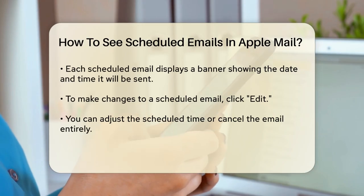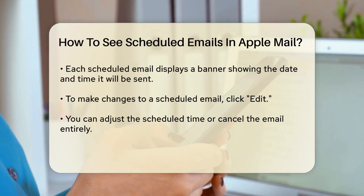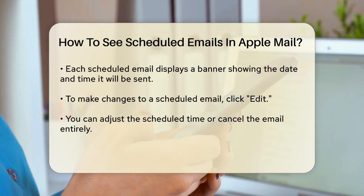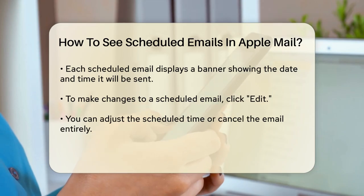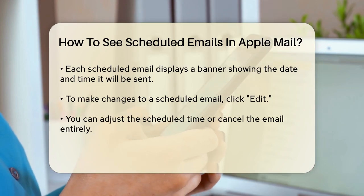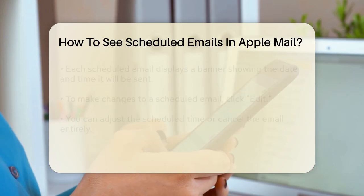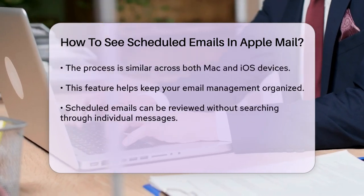On an iPhone or iPad, the process is similar but tailored to the mobile interface. To view your scheduled emails, open the Mail app and go to the Mailboxes screen. Here, you'll find a Send Later box. Tap on this box to see all your scheduled emails. Each email will have a banner at the top showing when it will be sent.